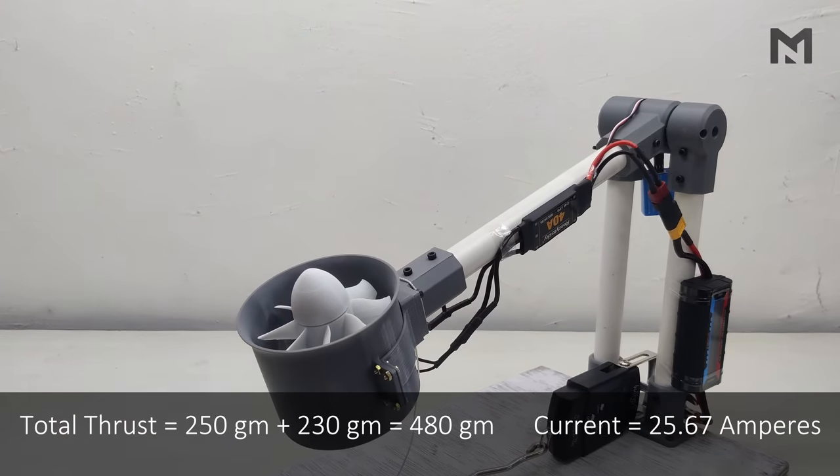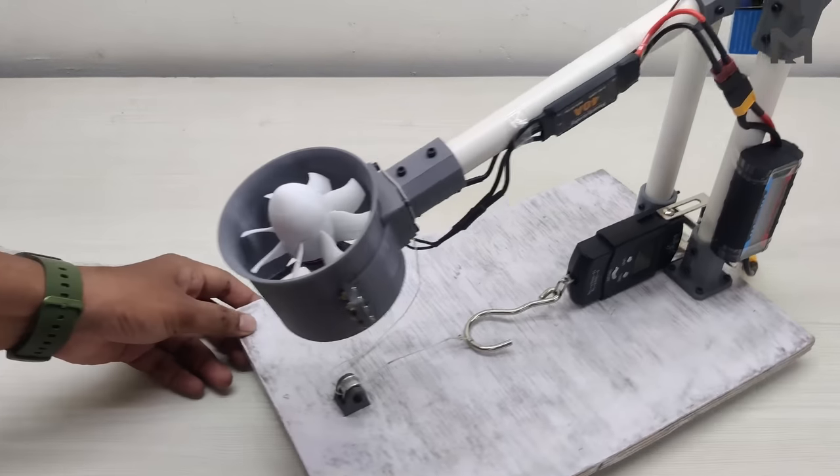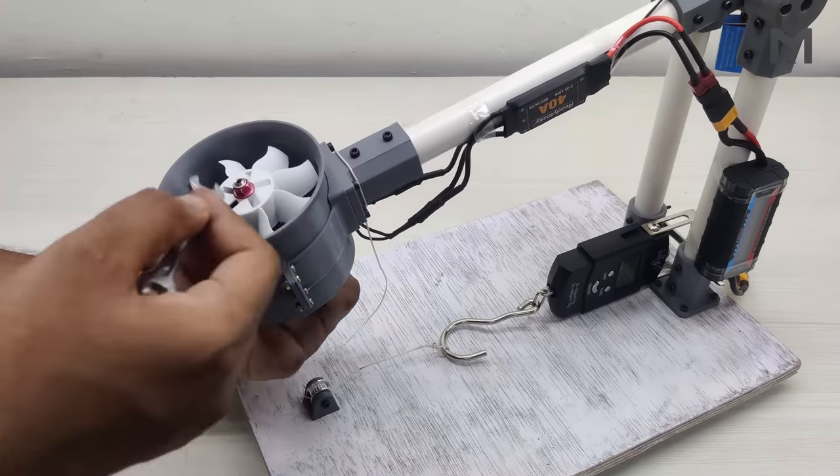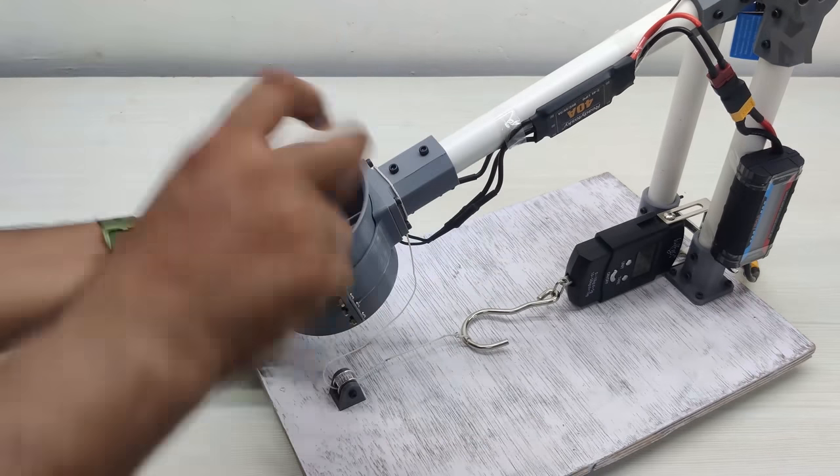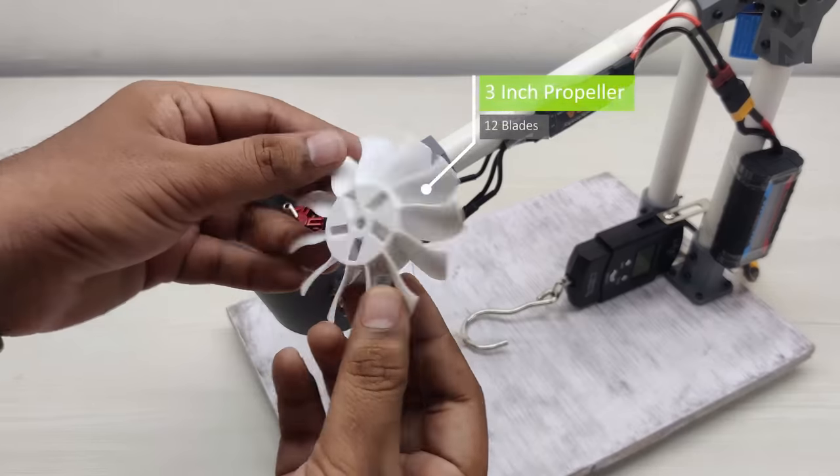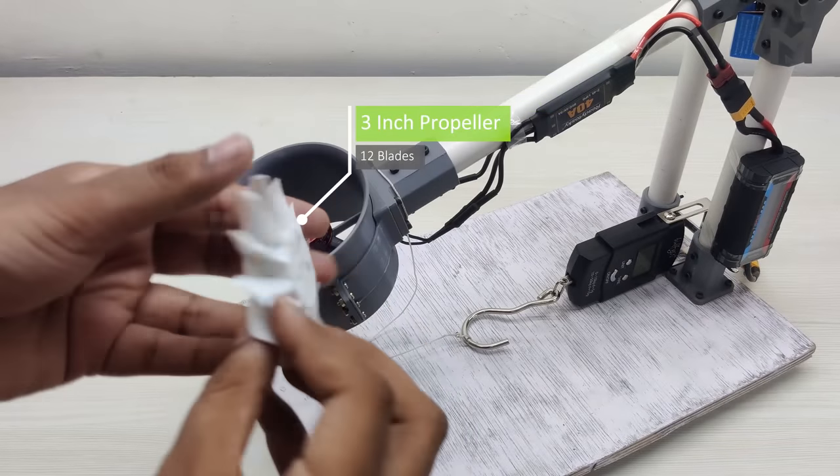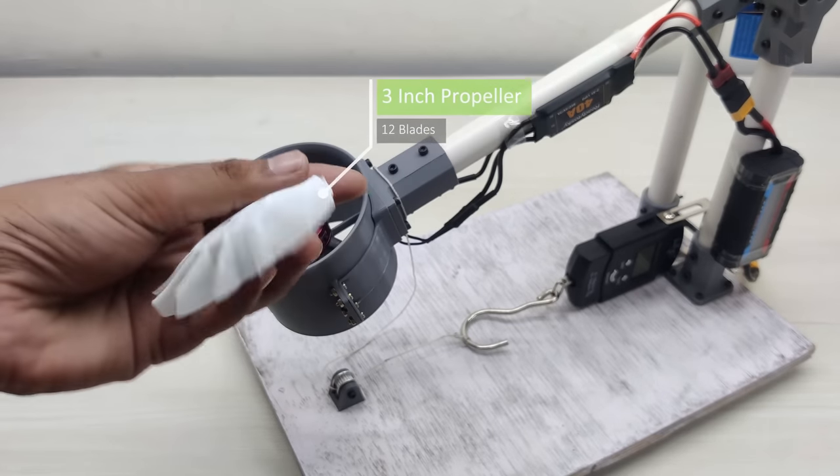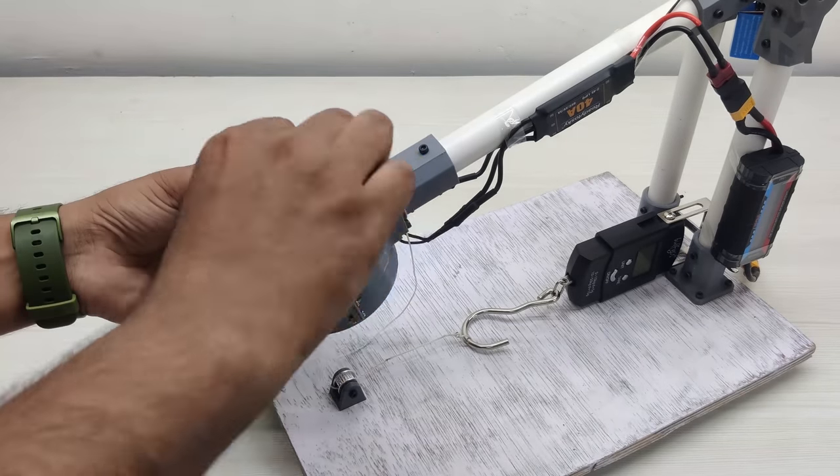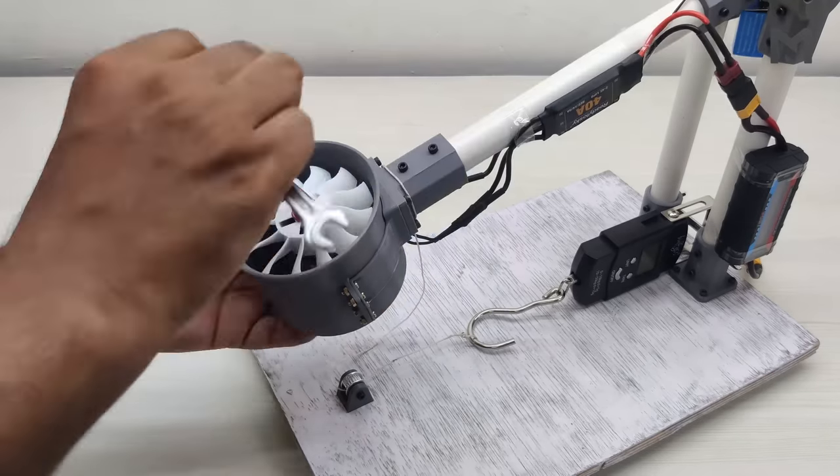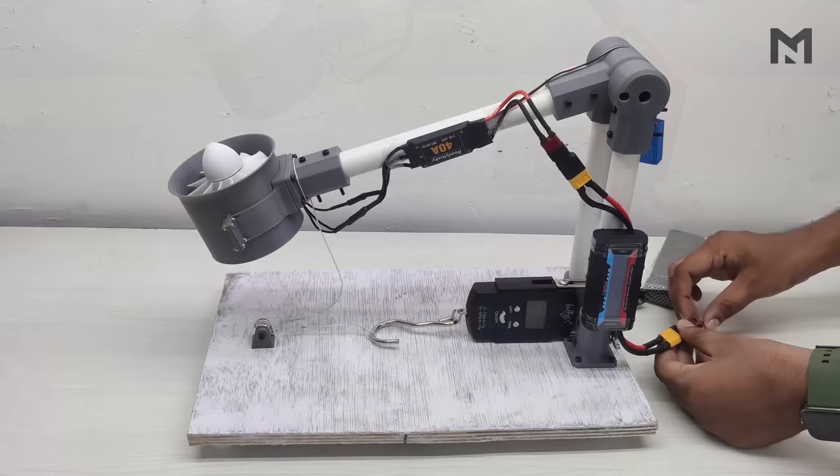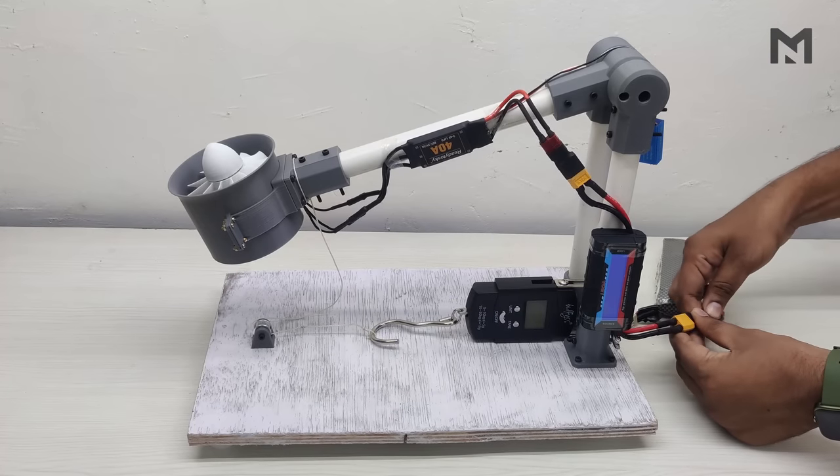This is a three-inch propeller with 12 blades. I have already removed all the supporting materials from it and now I will attach it to the motor. Now let's begin the thrust test of it.